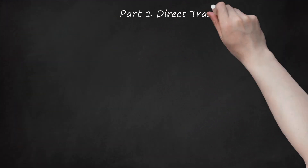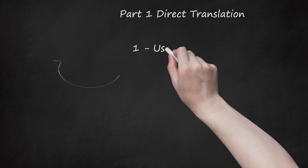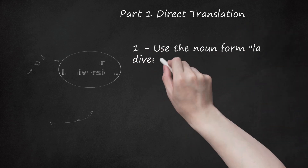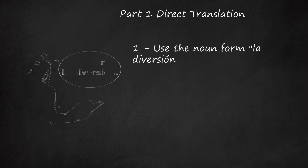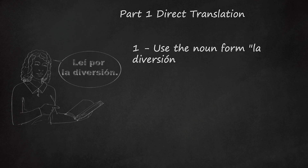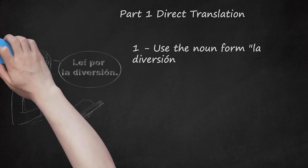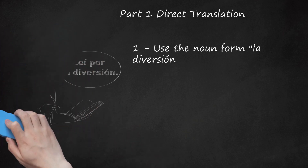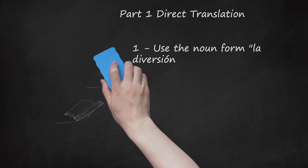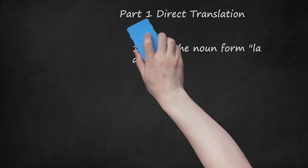Part 1: Direct Translation. 1. Use the noun form 'la diversión.' This feminine noun is the term you should use when referring to fun as its own separate thing or idea. Pronunciation: la-di-ver-si-ón. Example: 'Leo por la diversión' — I read for fun.